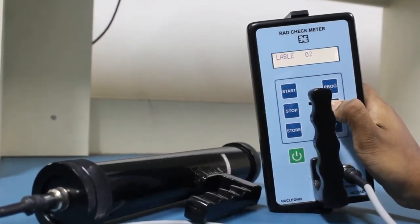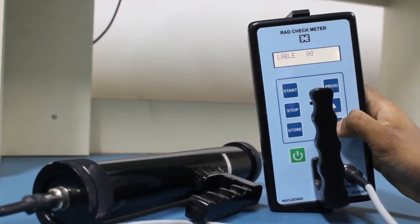Label option. This option allows the user to give code numbers to different locations when making measurements.